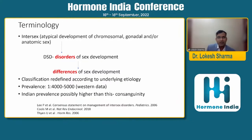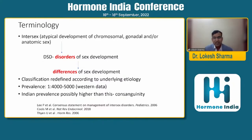In the last four or five years, 'Differences of Sex Development' is more commonly used, though 'Disorders of Sex Development' is still the most common term. In recent papers and textbooks, they have started using 'differences' because it is less stigmatizing for patients, and patient support groups accept that more comfortably. The prevalence is around 1 in 4,000–5,000 overall, but this is Western data. In India, we do not have any formal registry, but possibly it will be higher due to consanguinity.